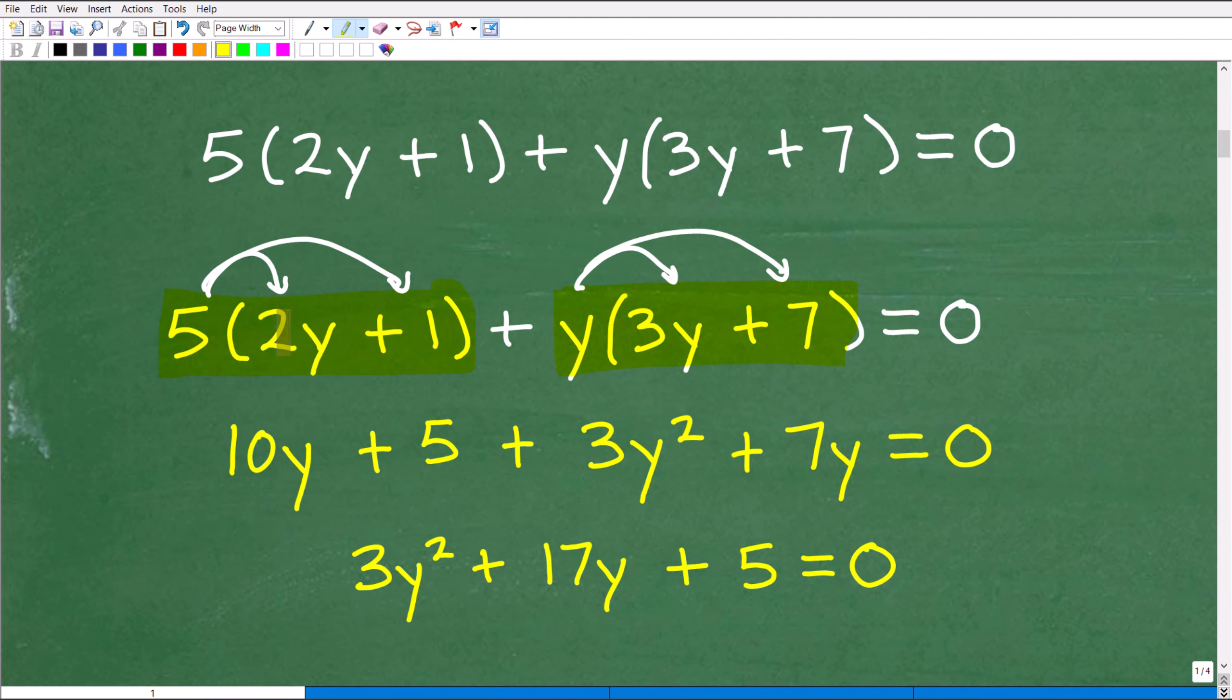So when I do that, I'm going to end up with five times two y is 10y. And then five times one is five. Y times three y is three y squared. And then y times that seven is seven y.